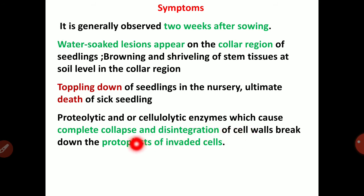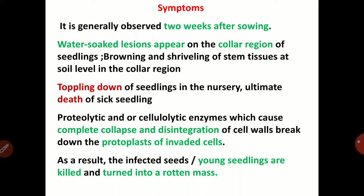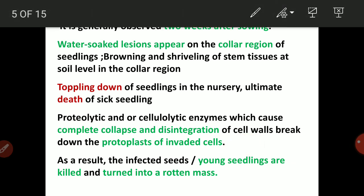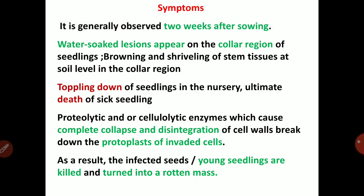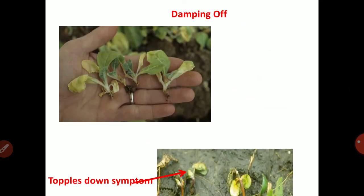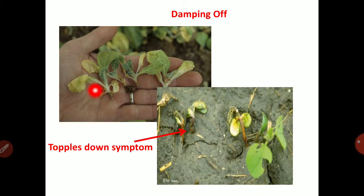The cell walls break down and the protoplast of the invaded cells disintegrates. As a result, the infected seeds and young seedlings are killed and turned into a rotten mass. These pictures represent the damping off symptom showing wilting and toppling down of seedlings, with yellowing leaves and water-soaked collar region.